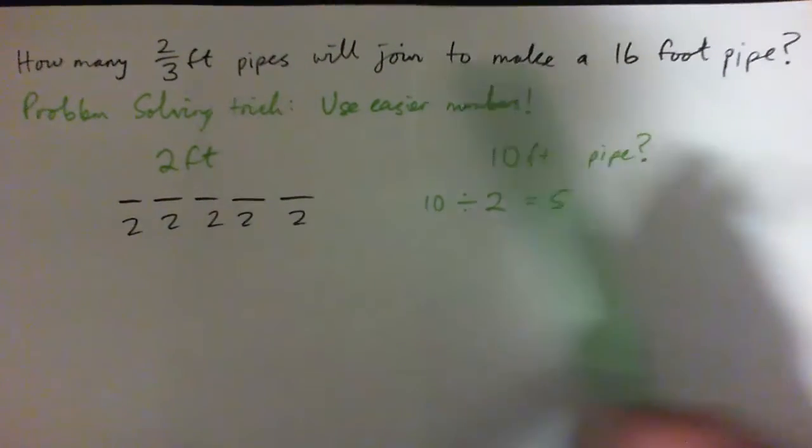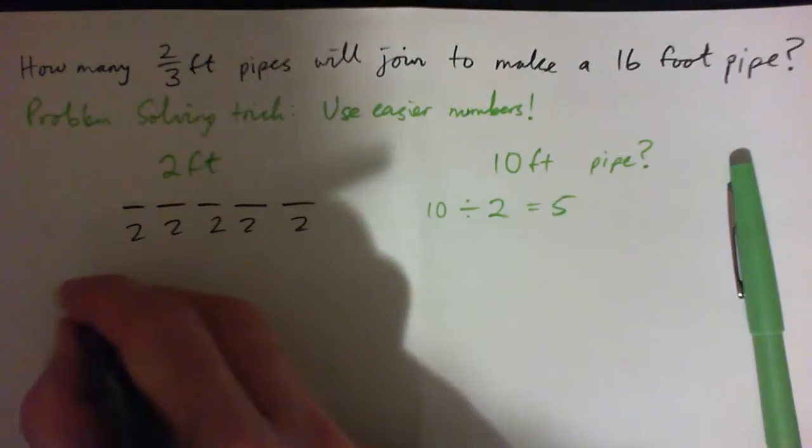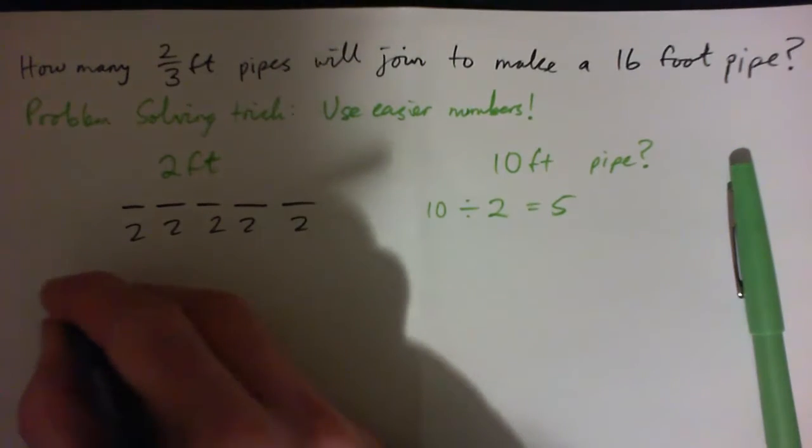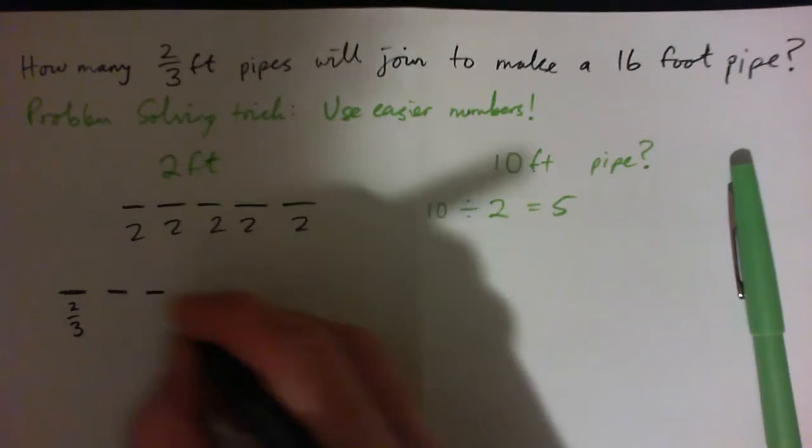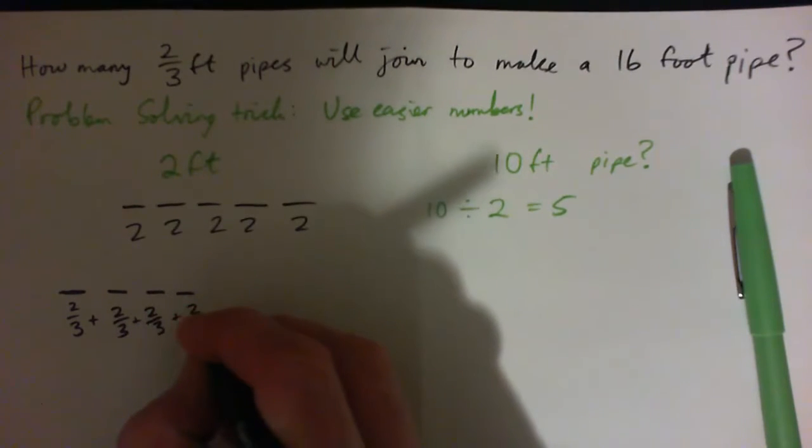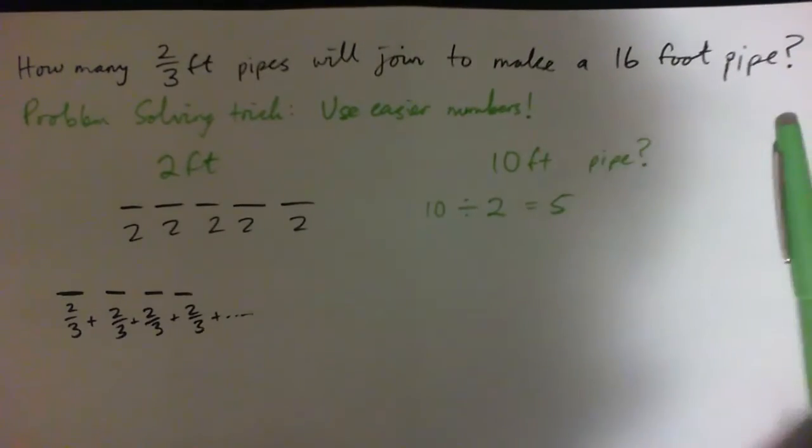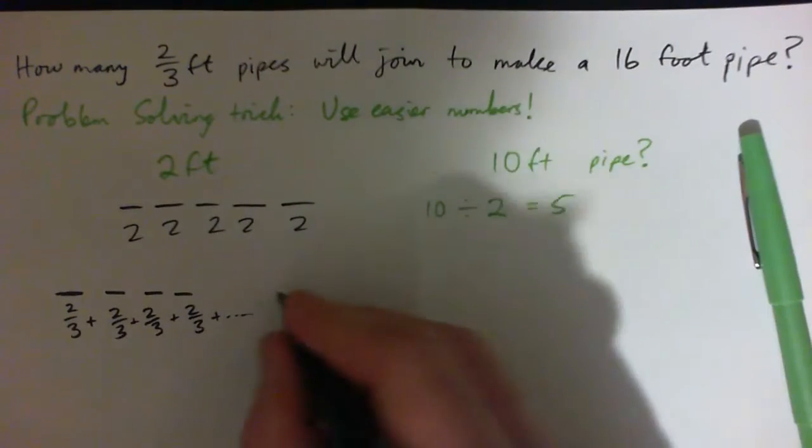So then you just go back to the original question and you go: okay, how many two-thirds pipes? So these are pipes that are two-thirds foot long. If I add up all these two-thirds, how many of them do I need to get to 16?